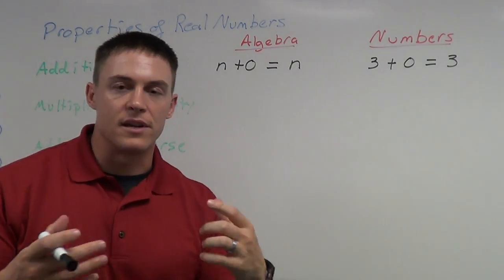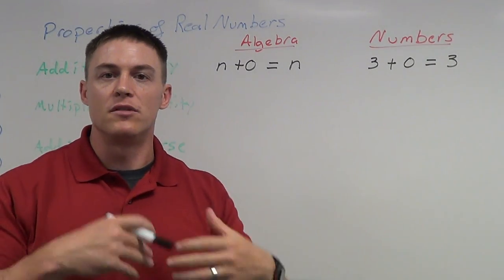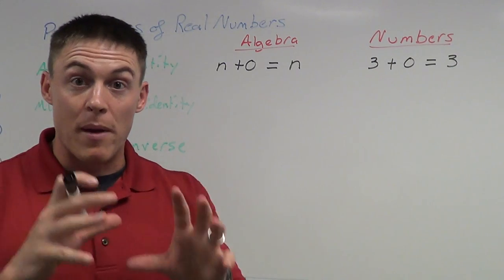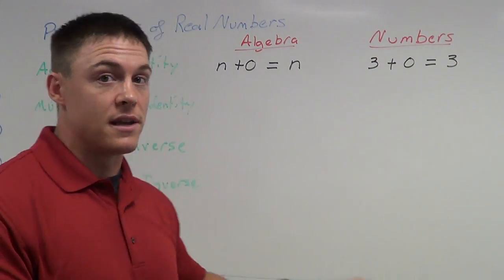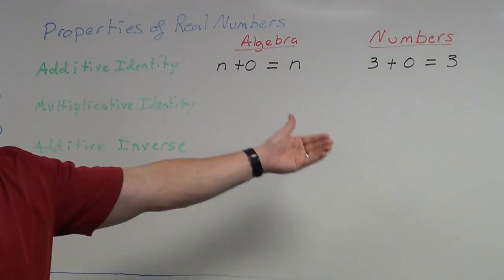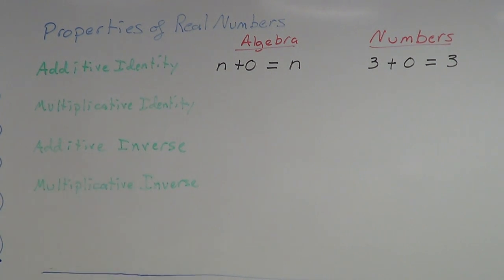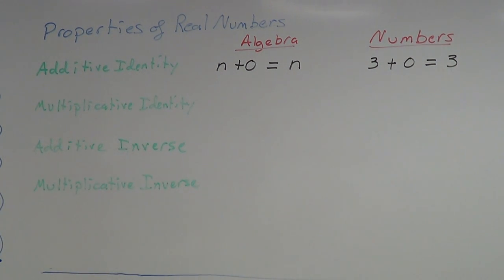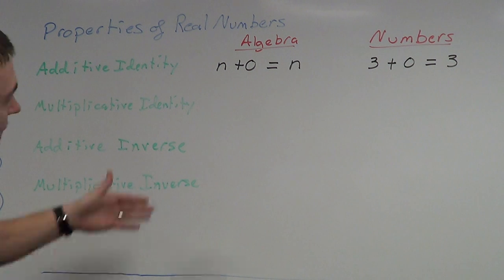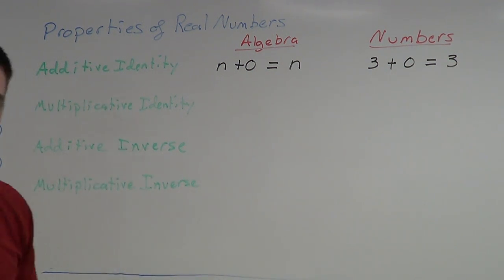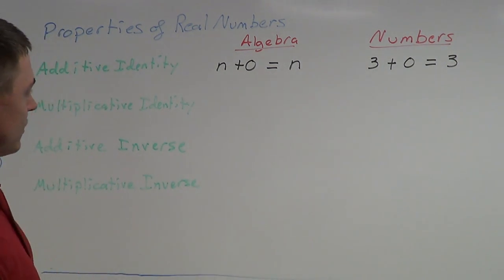That is the additive identity — a very basic, simple property you already know. What we're doing is taking these very basic properties and labeling them. Next we have the multiplicative identity, which is similar to the additive identity, but we're going to use multiplication instead of addition.